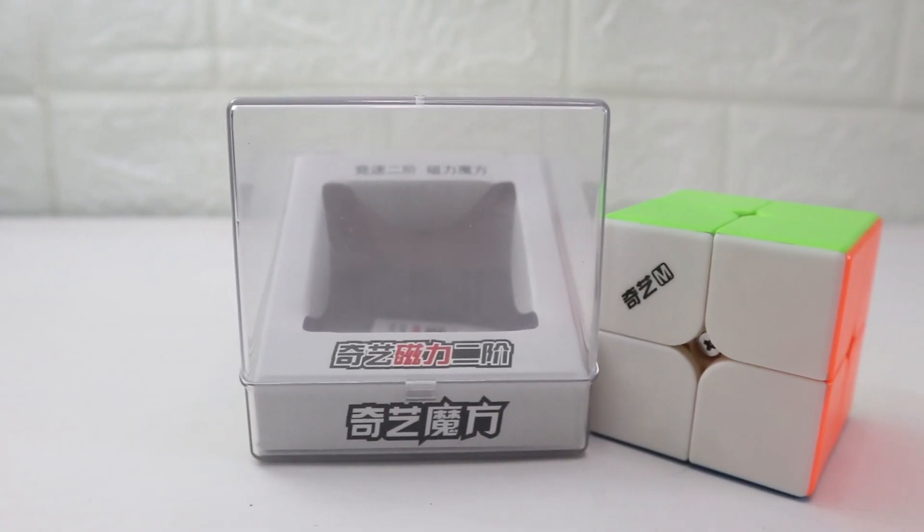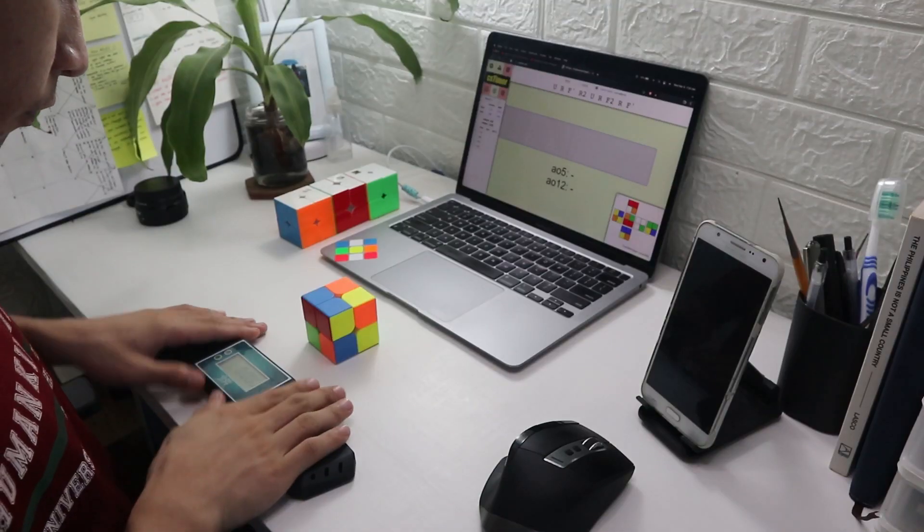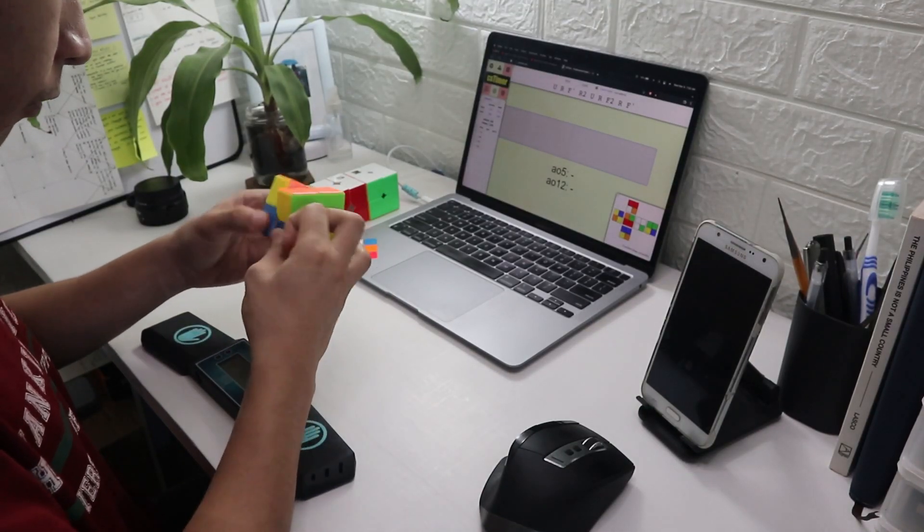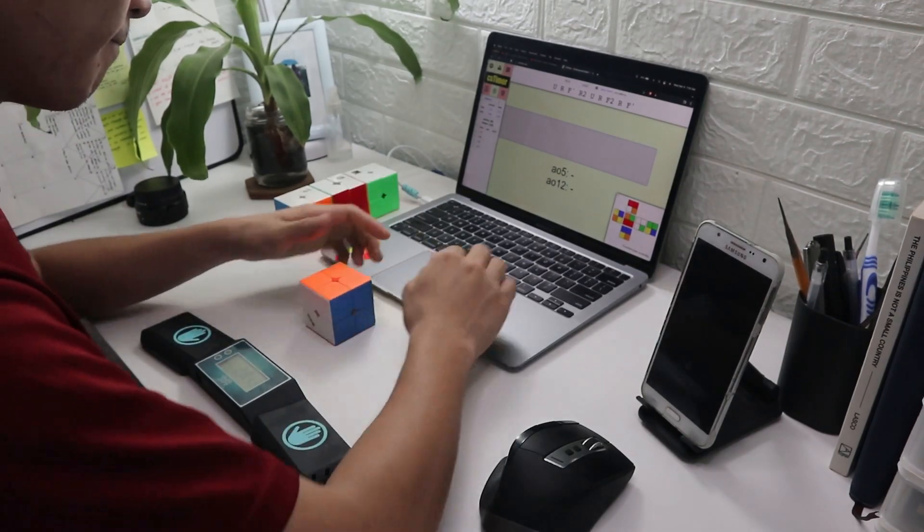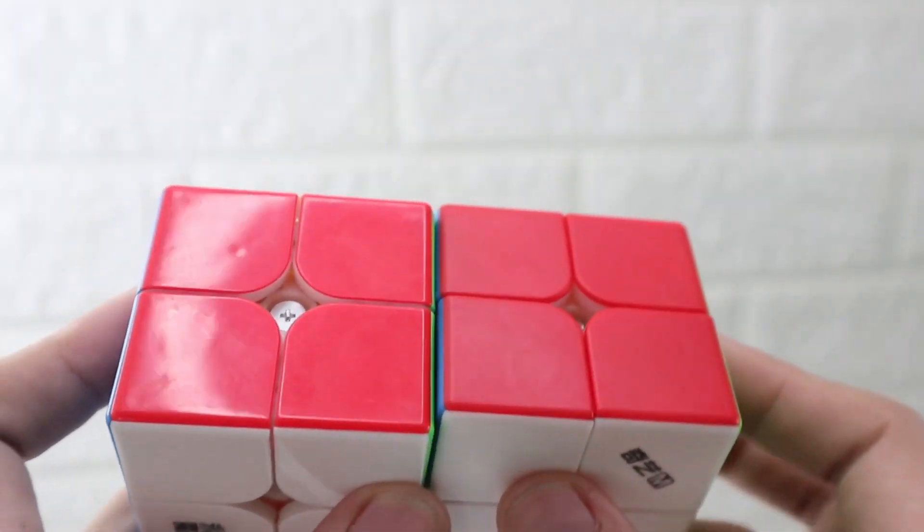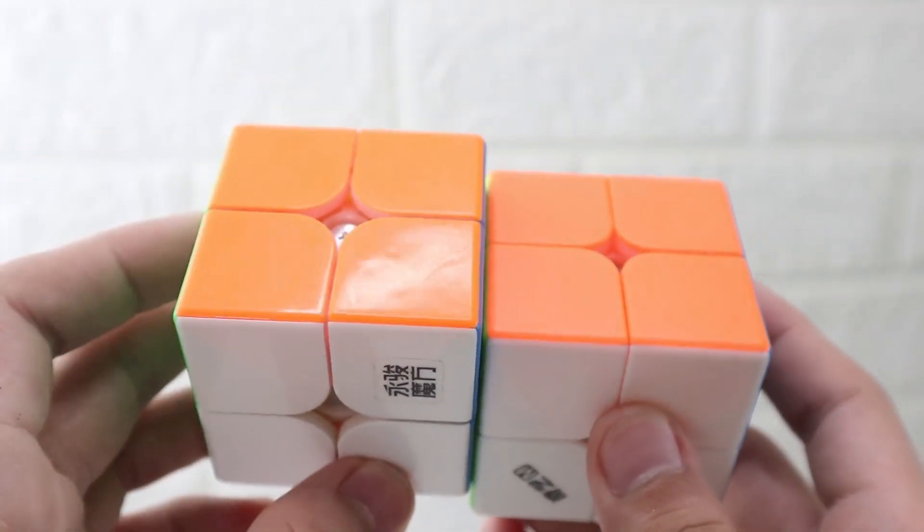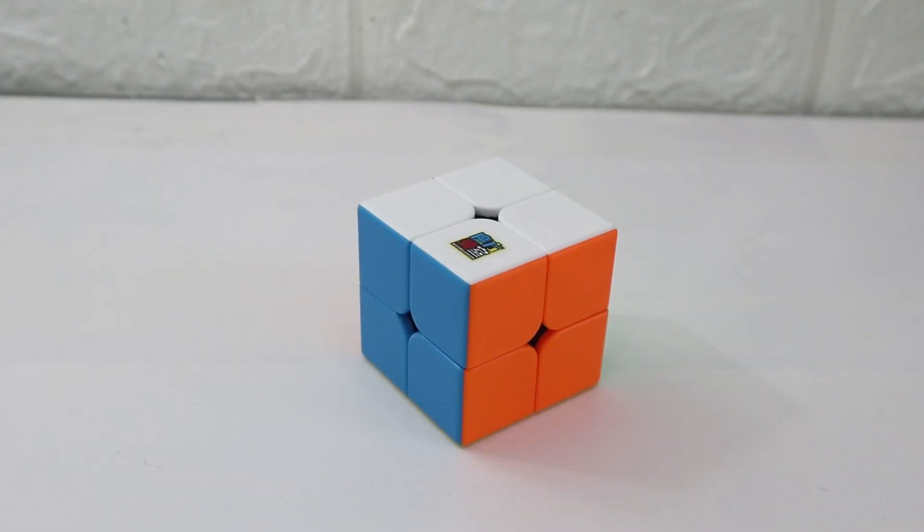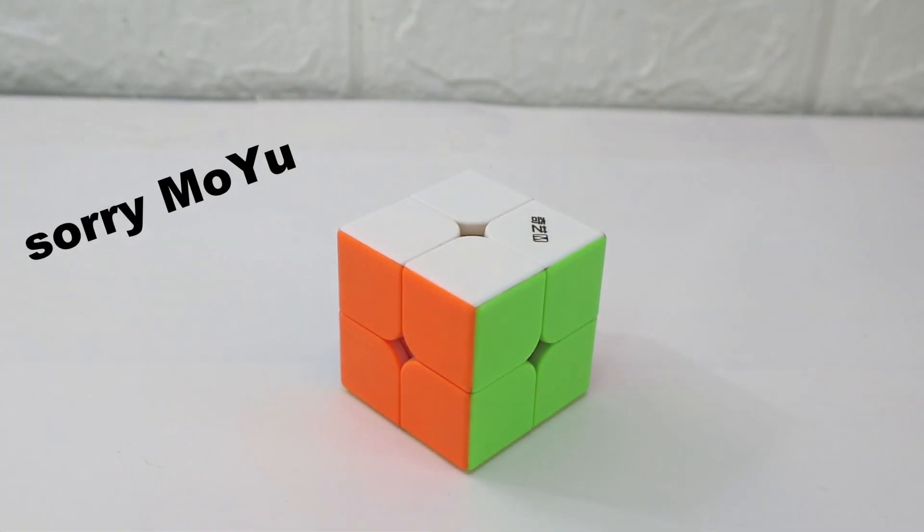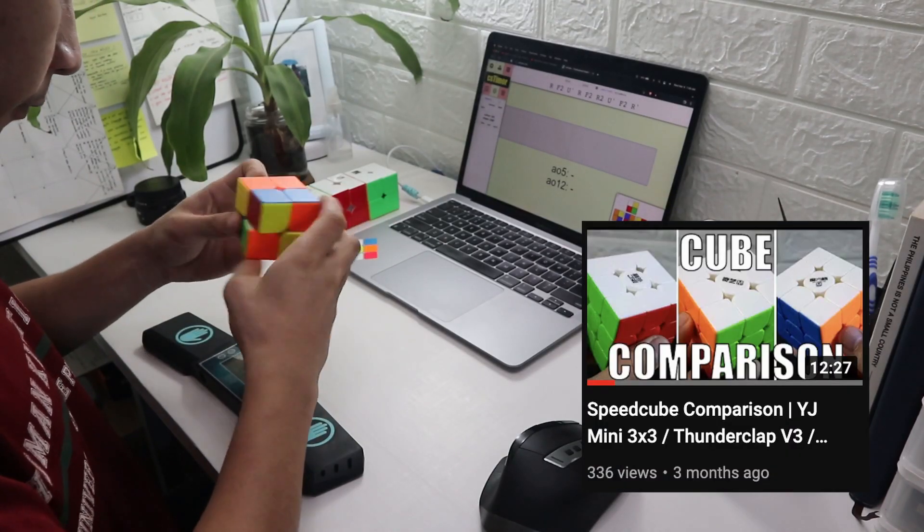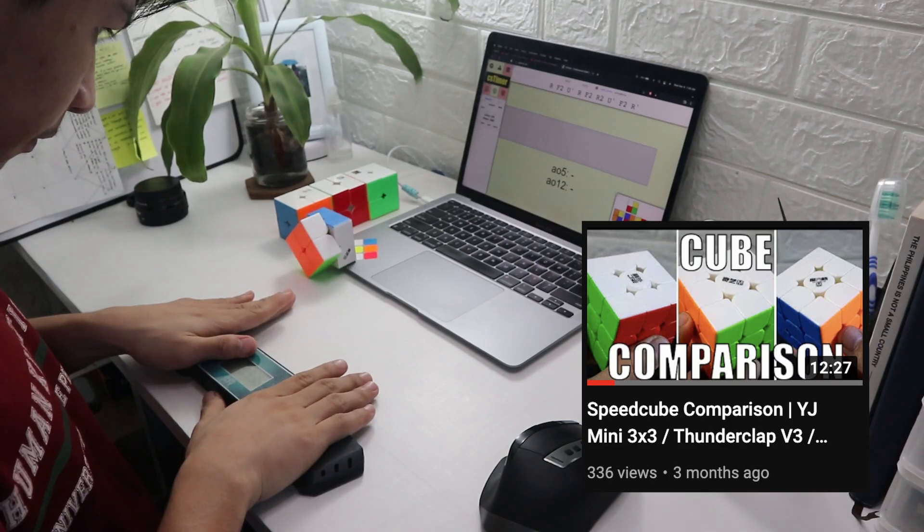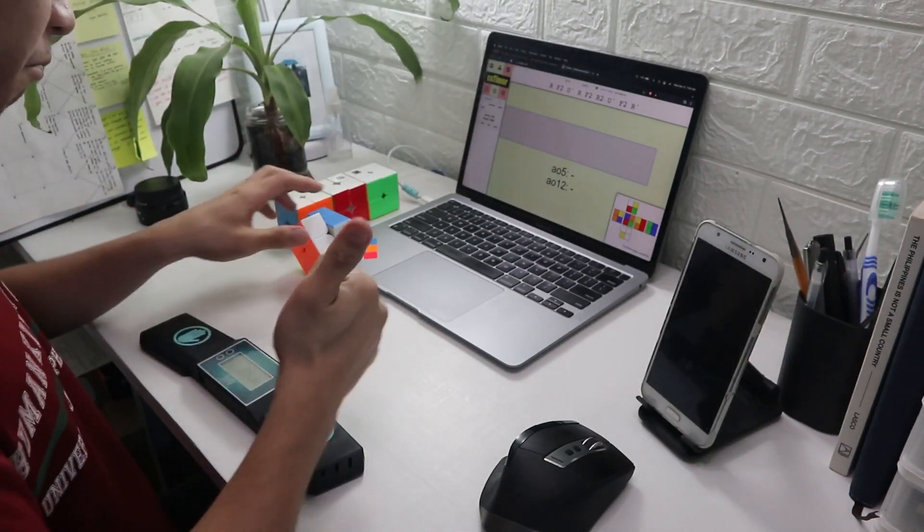I think this is what the Meilong 2x2 will feel like if it's magnetic and has primary internals for added speed. It's airy and hollow but it doesn't feel cheap at all. It's super glidey which is good when you're spamming TPS. It also has this matte plastic or frosty plastic and it has QiYi's signature color shades in their puzzles which I think are the best shades among others. And by the way, if you haven't watched my review of QiYi MS 3x3, the 3x3 puzzle in their MS line of cubes, I'll link it in the description below.